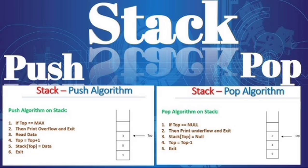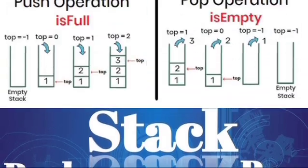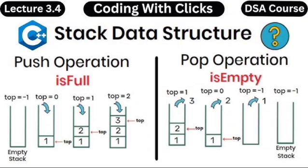If top is equal to max, then pop returns null. Push causes overflow, and pop on an empty stack causes underflow. When pushing, top is incremented (top plus plus).